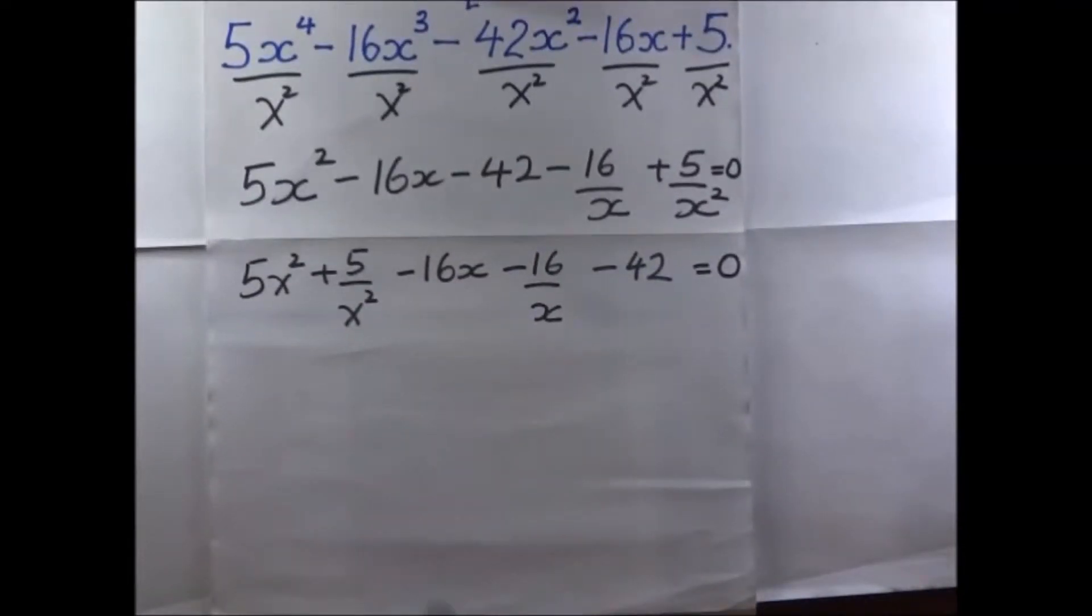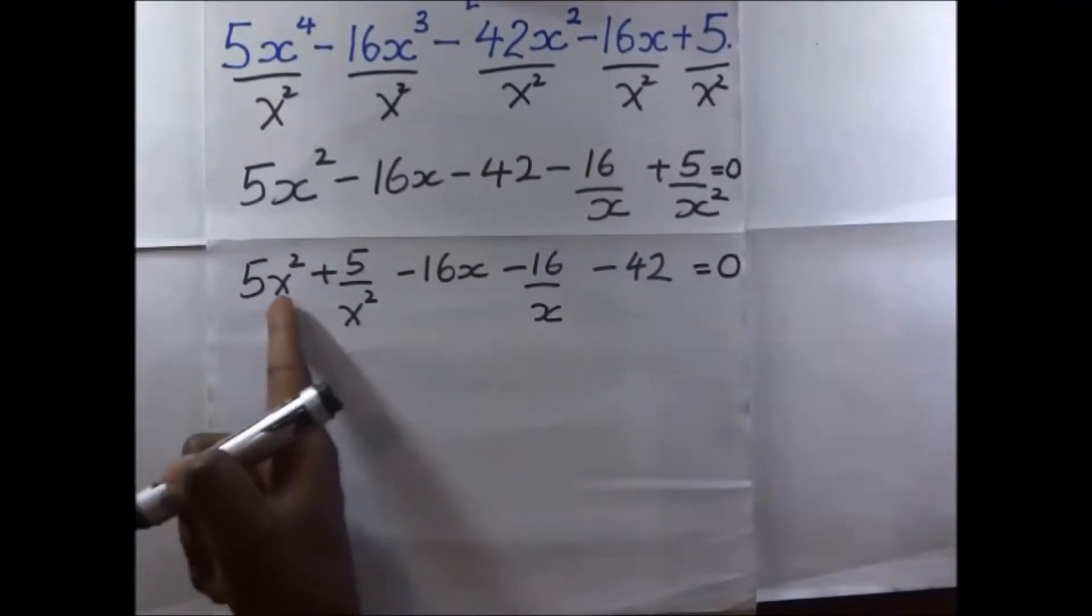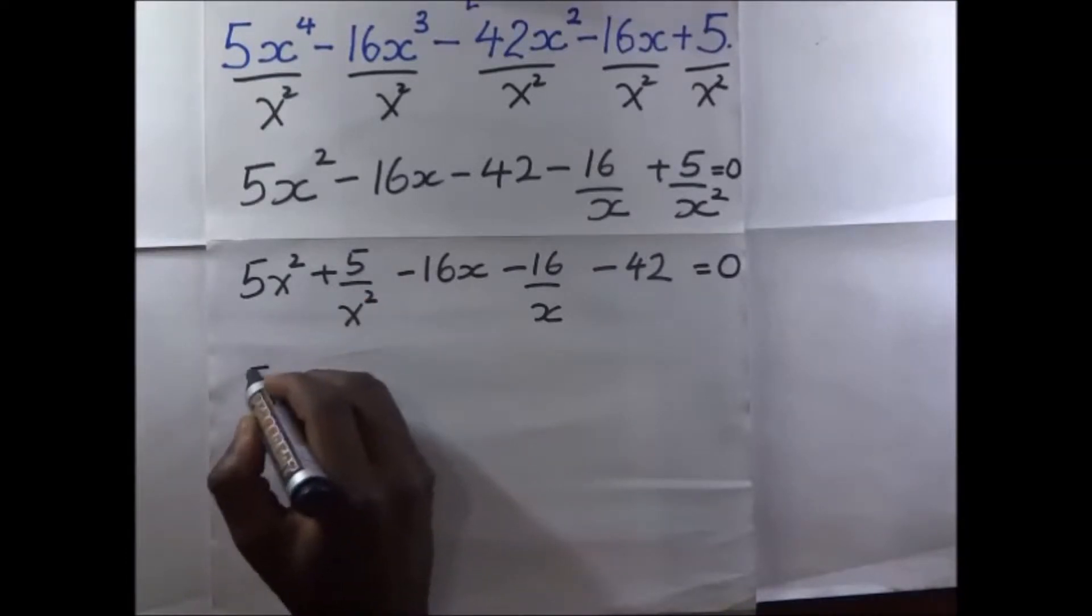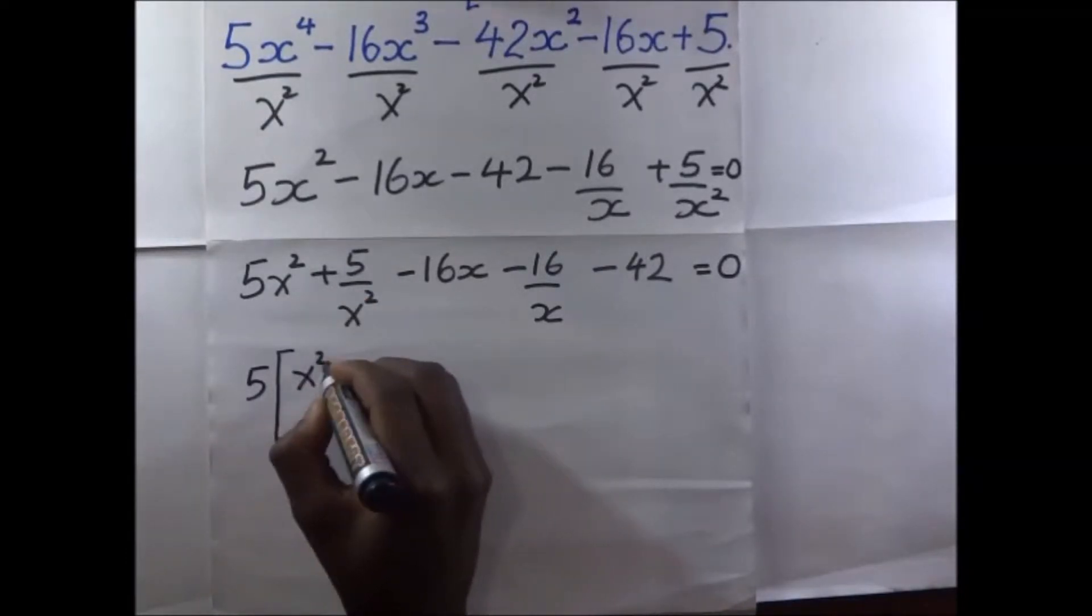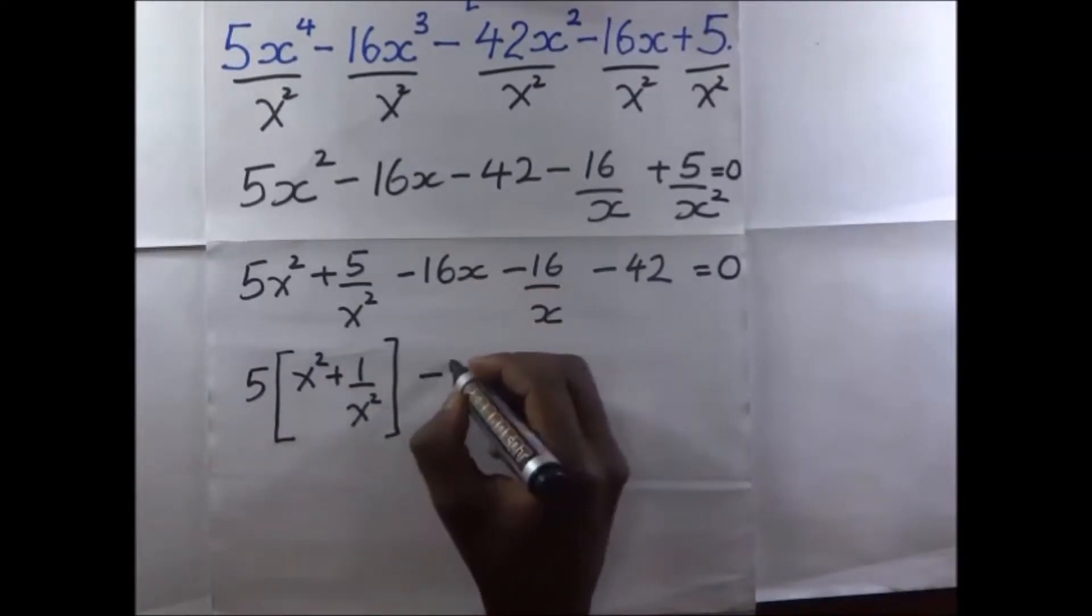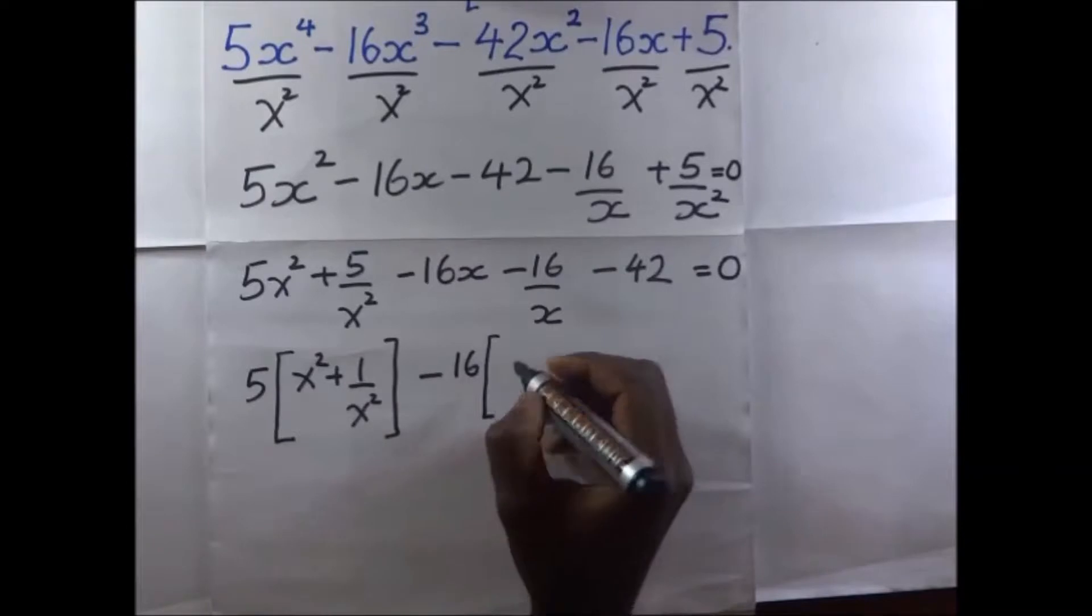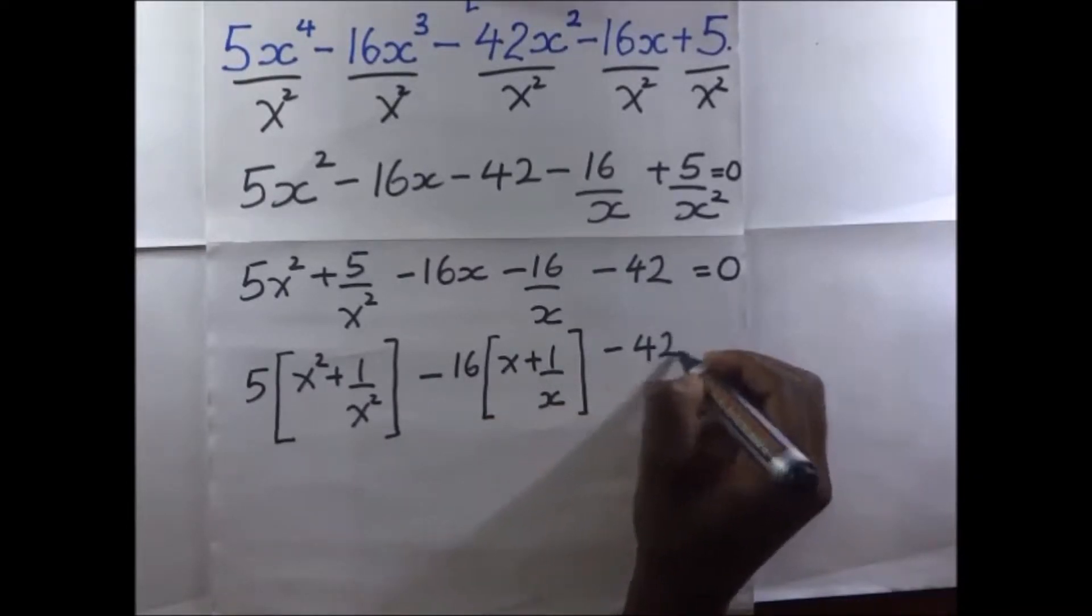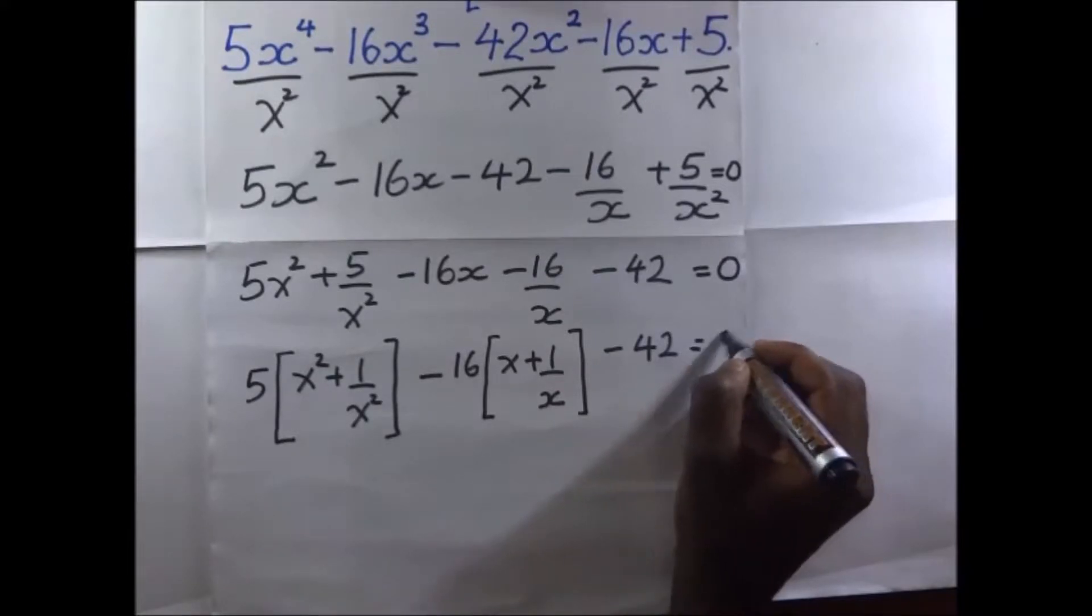So after collecting like terms, we factorize out the common term here. The common term here is going to be 5. The common term here is 16. Minus 42. That's going to give us 0.